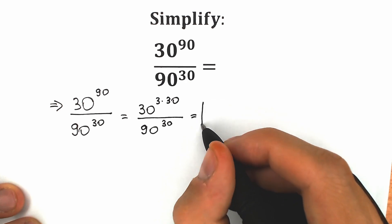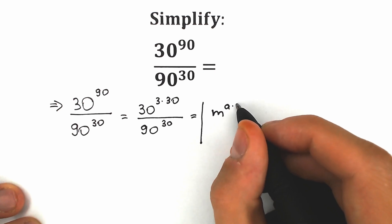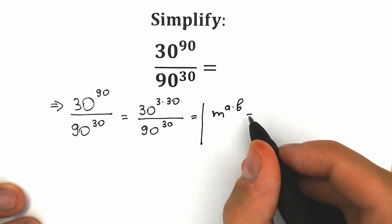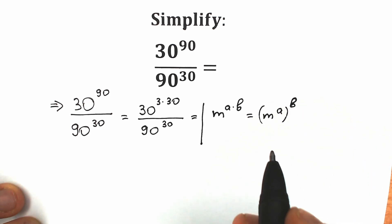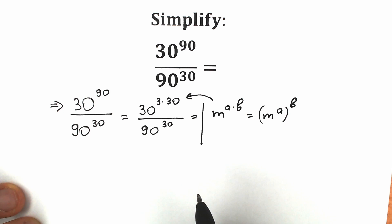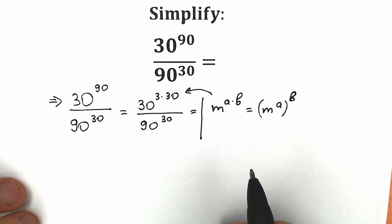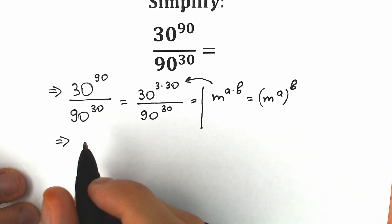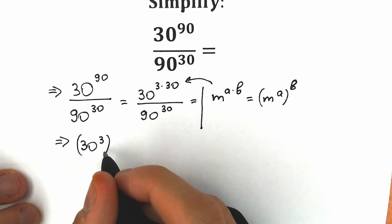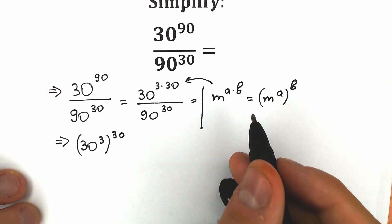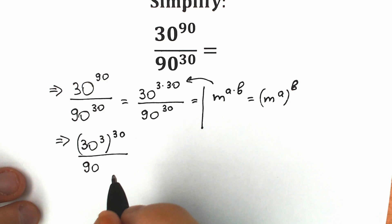Right now we need to remember a really great algebra property — a really great power rule. When we have m to the power a times b, we can write it as m to the power a, raised to the power b. We're going to apply this property in the numerator. We have 30 to the power 3 times 30, so we bring the 3 inside the parentheses: we get 30 to the power 3, raised to the power 30, divided by 90 to the power 30.